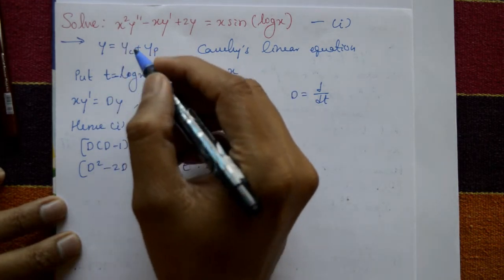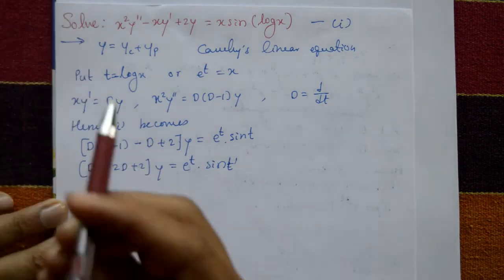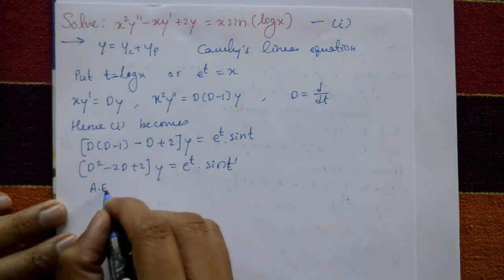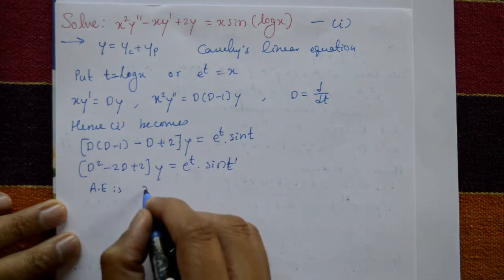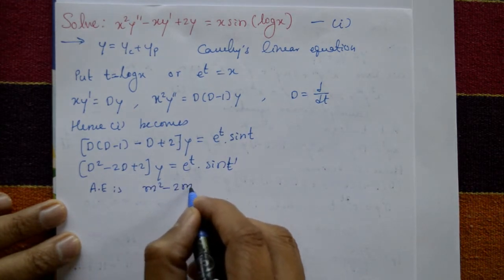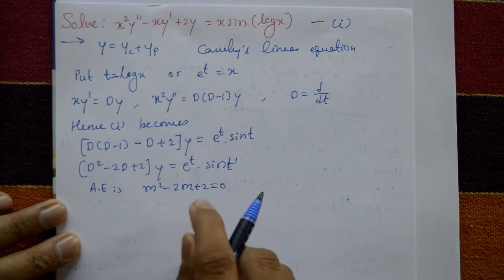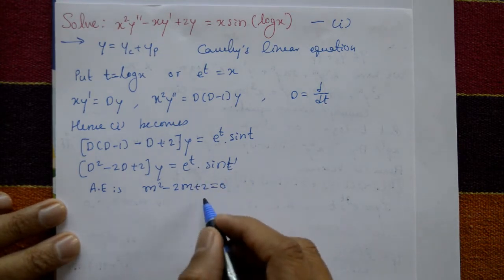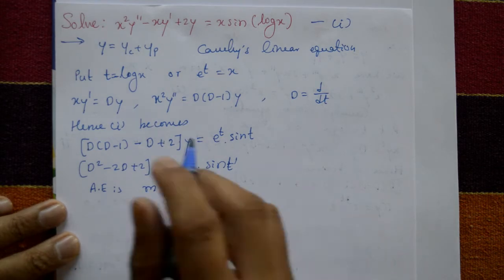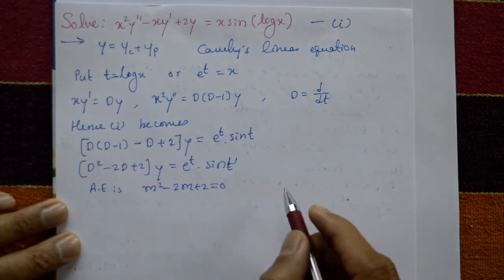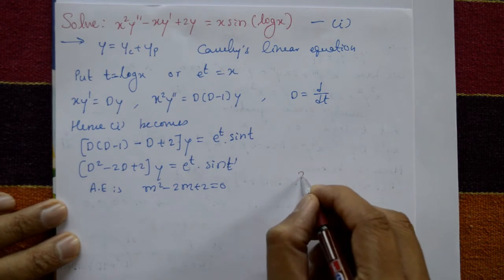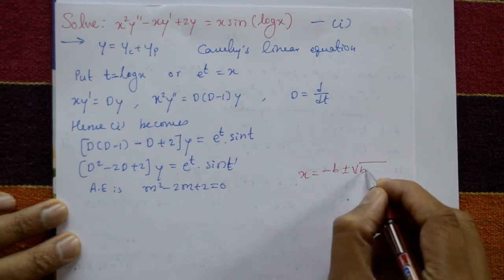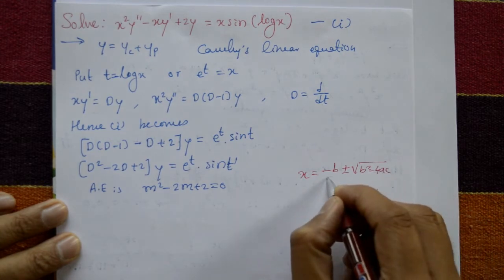Now find the complementary function. The auxiliary equation is m² − 2m + 2 = 0, with right-hand side equal to 0. This cannot be factorized — there is no common factor. So we use the quadratic formula: x = (−b ± √(b²−4ac)) / 2a.